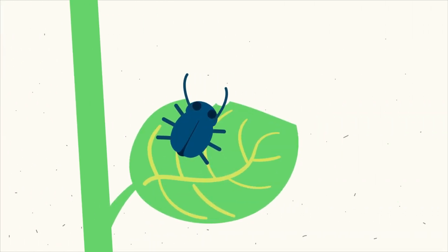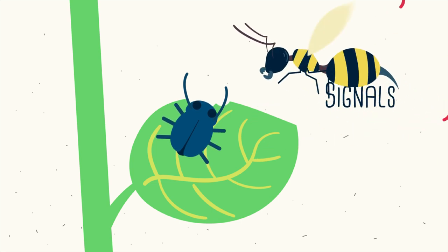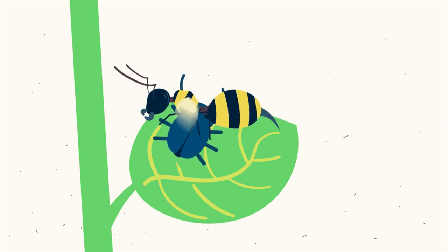Plants are so clever, they can even send signals in the air to call on insect predators that will take out an attacker.